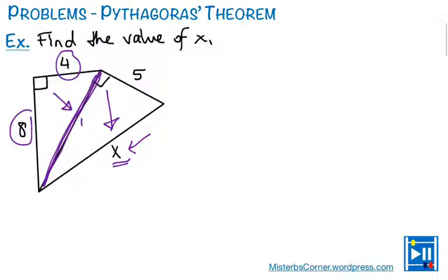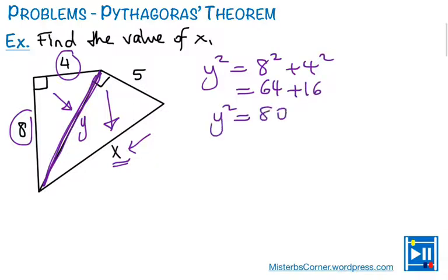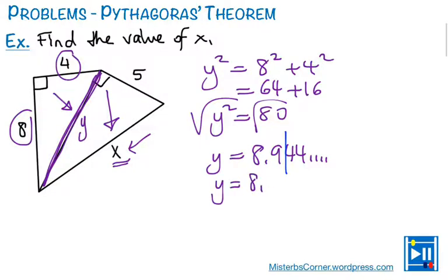So I'm going to go like, let's call this as y. So I'll go like, y squared, because it's a hypotenuse, it's going to be isolated, is 8 squared plus 4 squared, and that's going to be 64 plus 16. So I'm going to end up saying y squared is 80. So when I take the square root of both sides, I'll say y equals 8.944, and so on. And let's write this up to one decimal place, doesn't matter, it doesn't state in the question, so let's go with this. So it's y equals 8.9 centimeters.